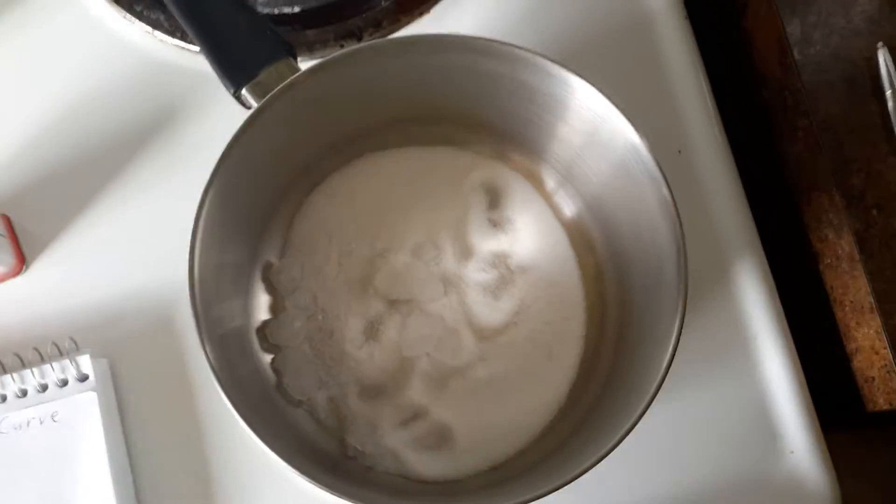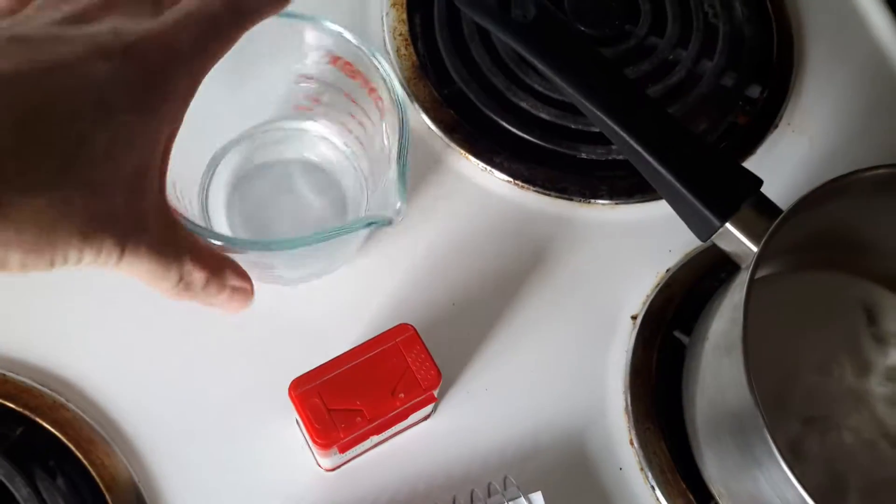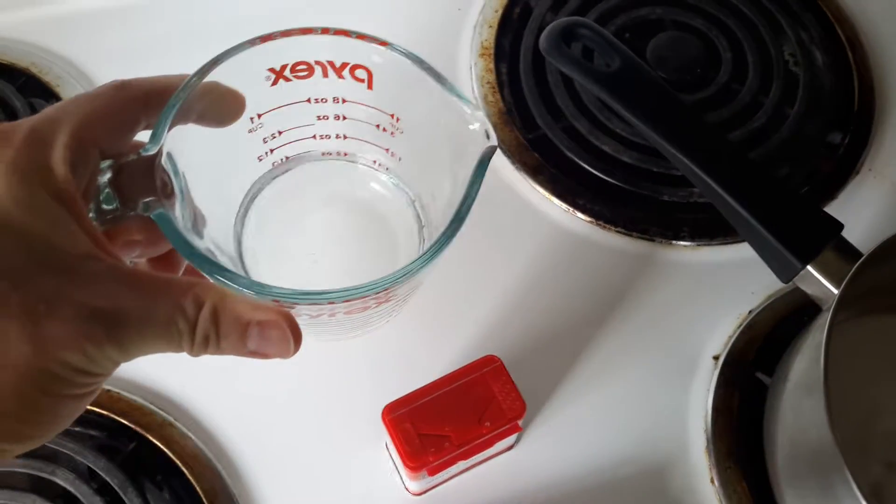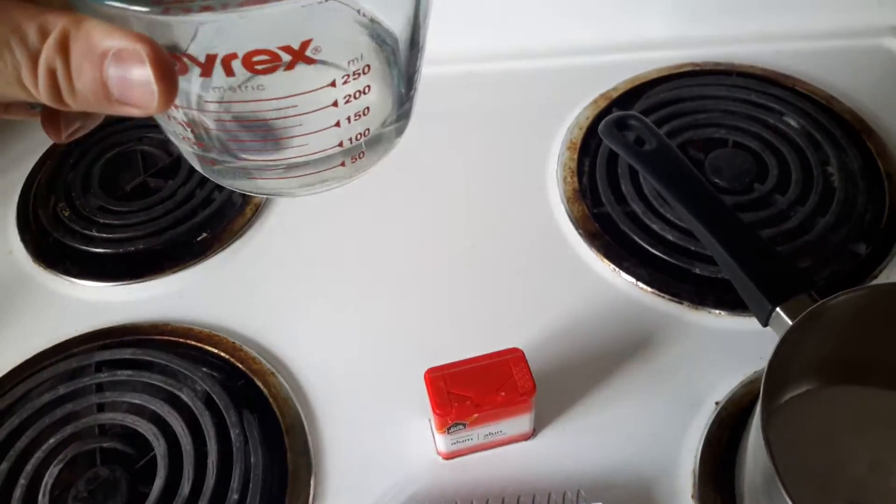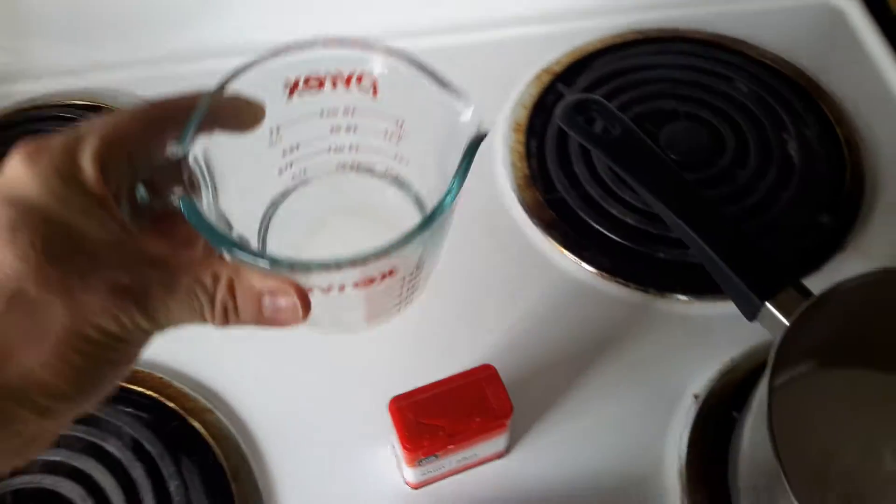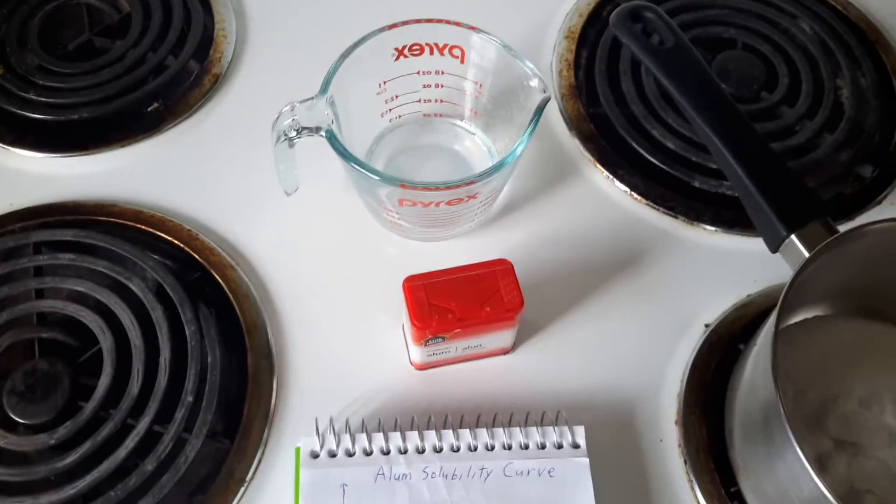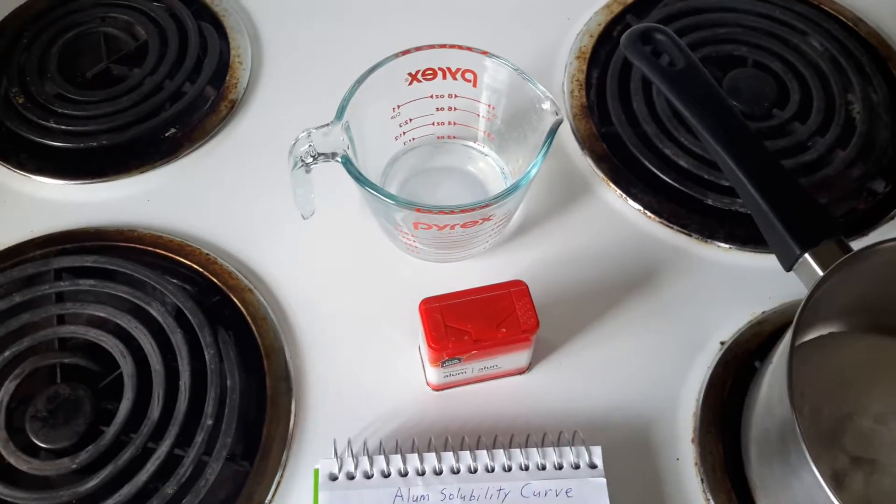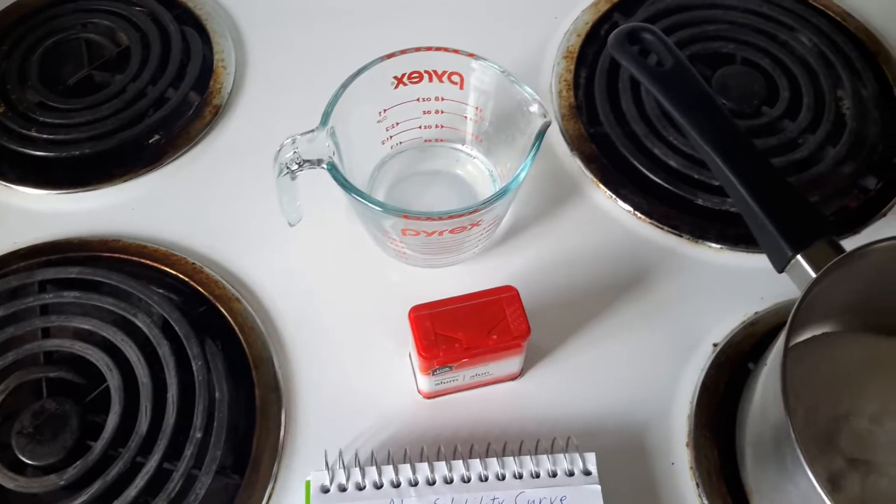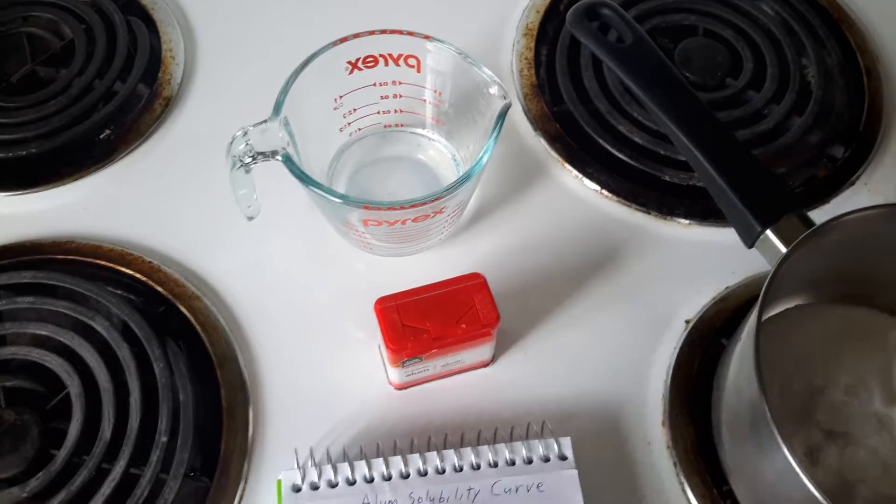So I've got the alum all together in a pot here, and I've got some water. Now I've got about the same amount of water that I have alum, so I've got in here about 75 milliliters of water, and the real handy thing about the metric system is that 75 grams of water is 75 milliliters.